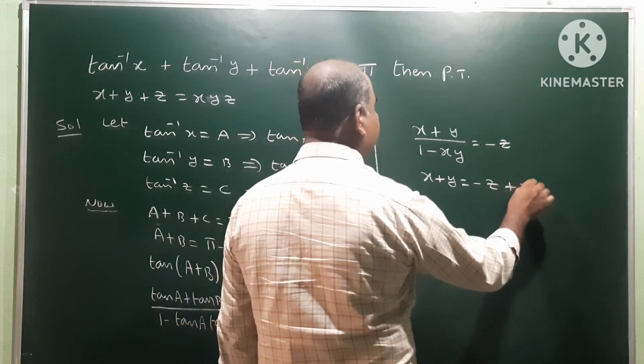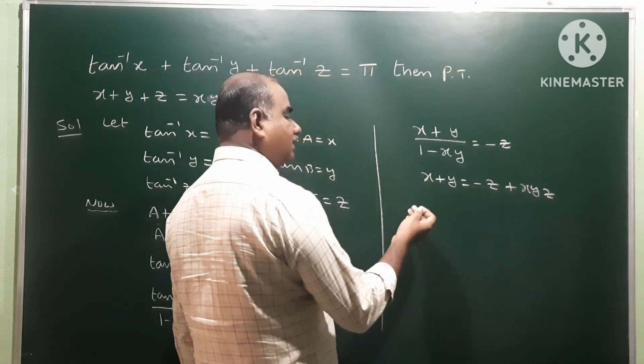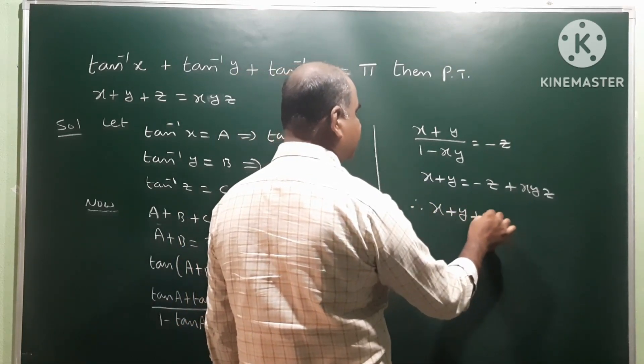Transposing minus z to left side, therefore finally we get x plus y plus z is equal to xyz.